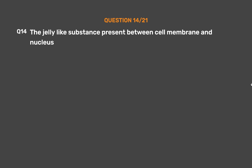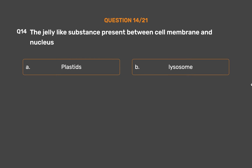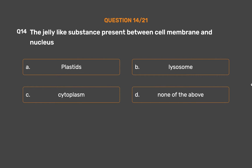Question No. 14: The jelly-like substance present between the cell membrane and nucleus. Option A: Plastids. Option B: Lysosome. Option C: Cytoplasm. Option D: None of the above.